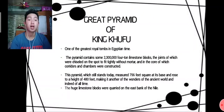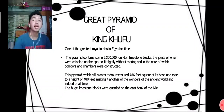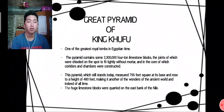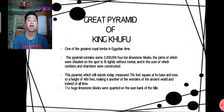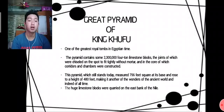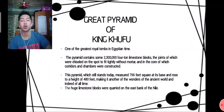The huge limestone blocks were carried from the east bank of the Nile. The pyramid was finished off with slabs of polished granite quarried and brought down from Aswan. It still exists today, standing at 480 feet tall with a 756-foot-square base, and is declared one of the Wonders of the Ancient World.